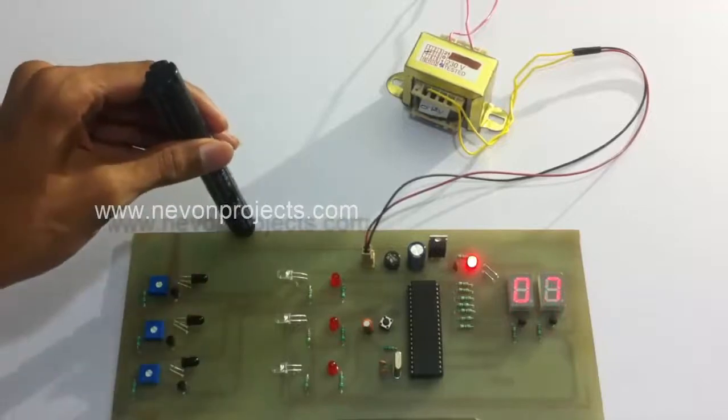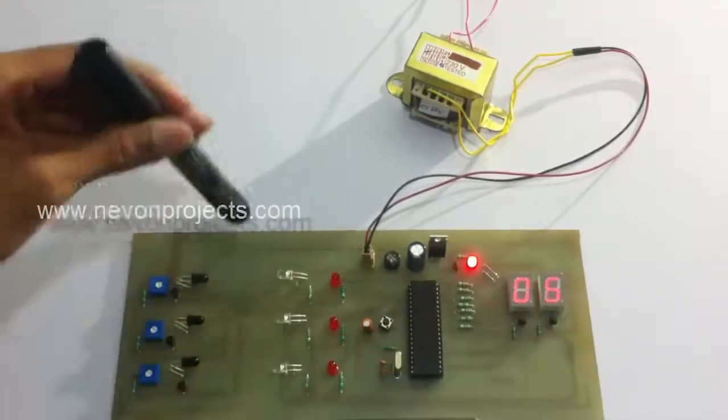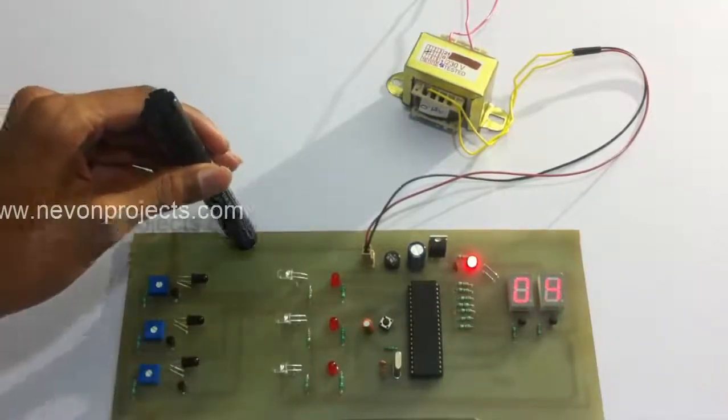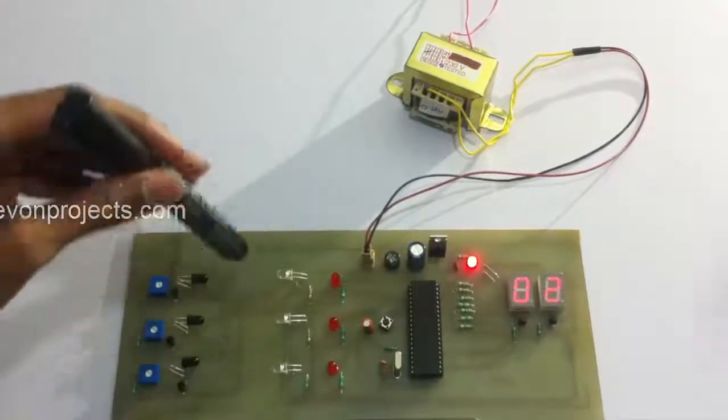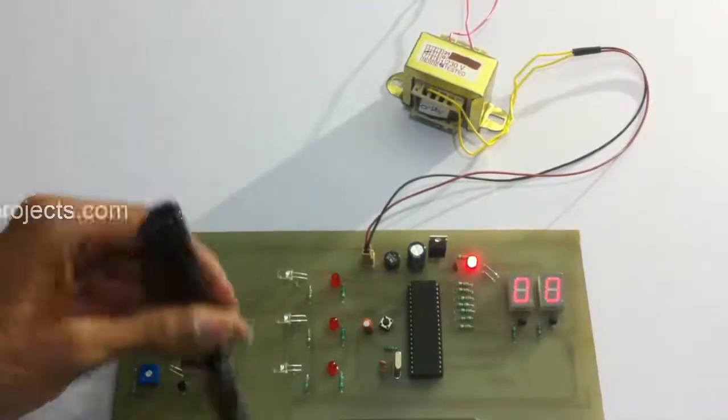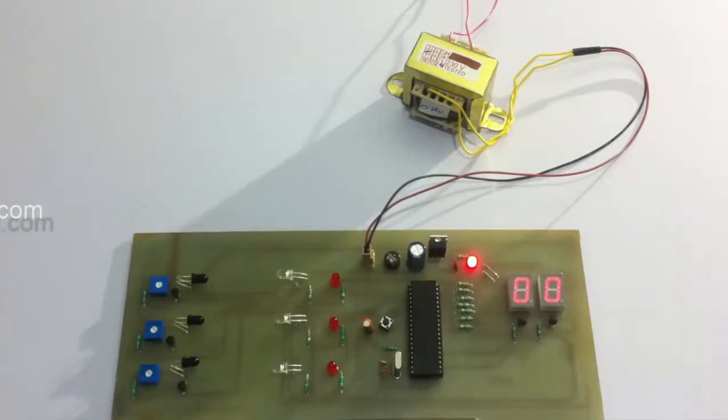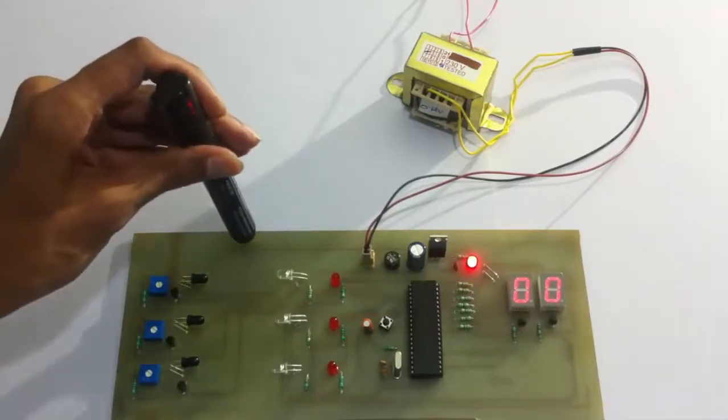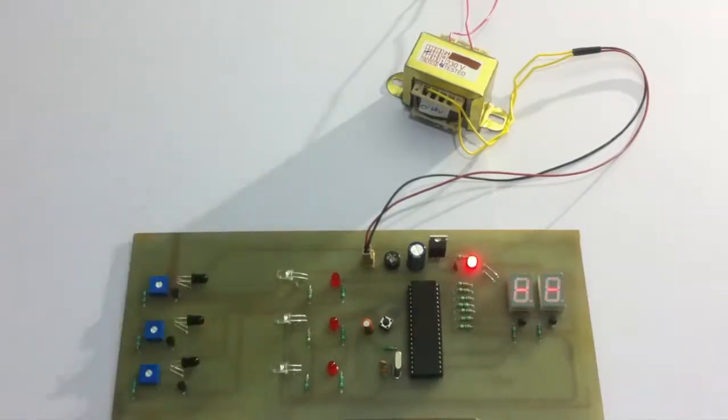It also consists of an important function that locks the system if you want it that way. After the count goes below a specific value, it locks the entire system and becomes blank.